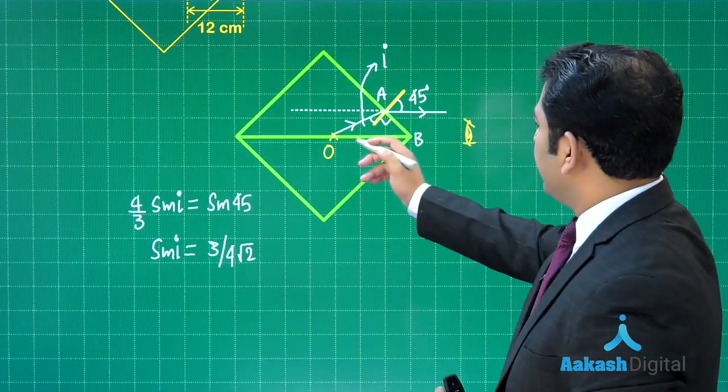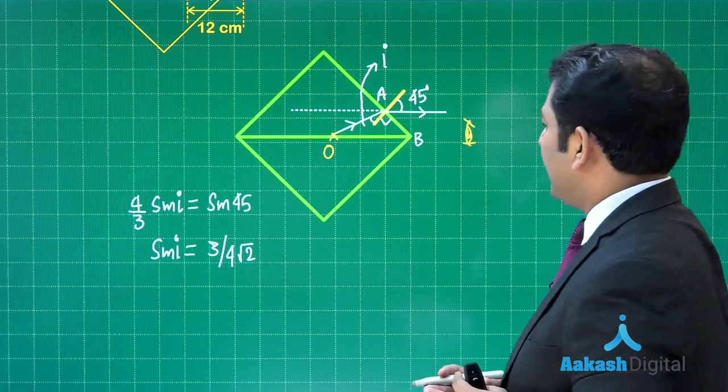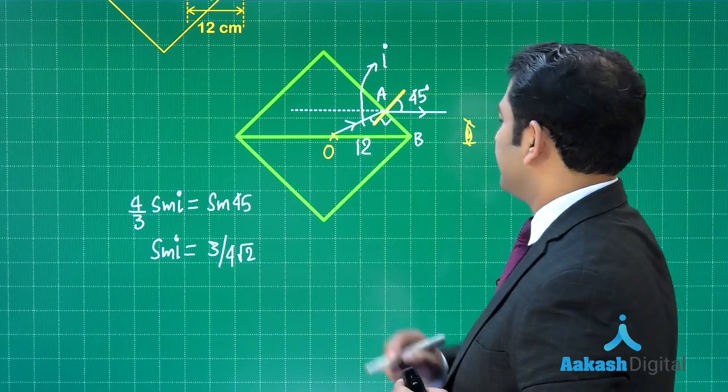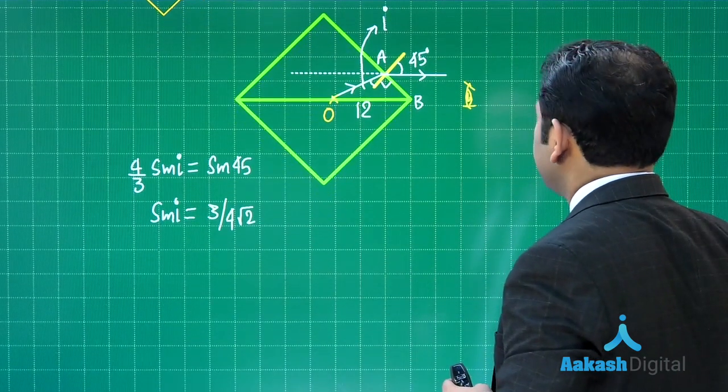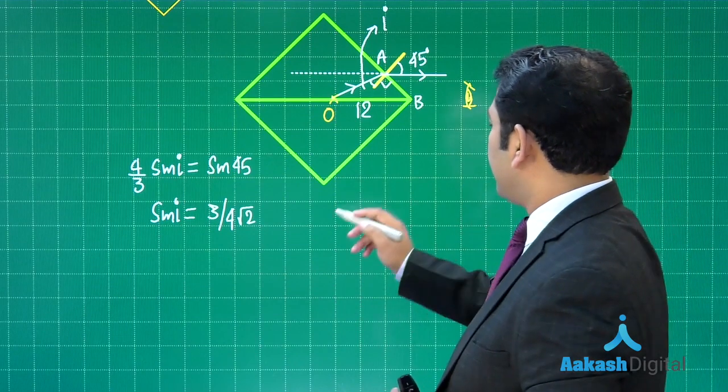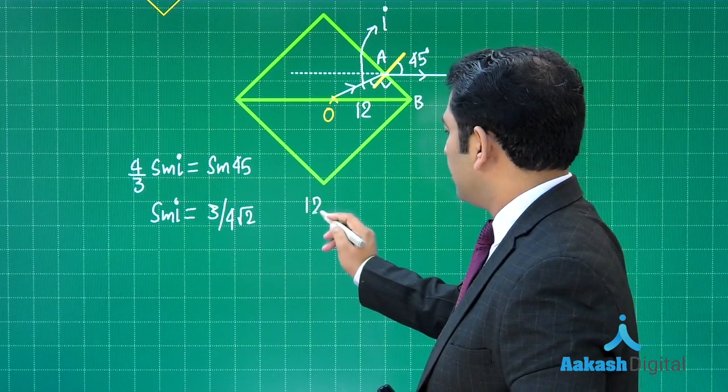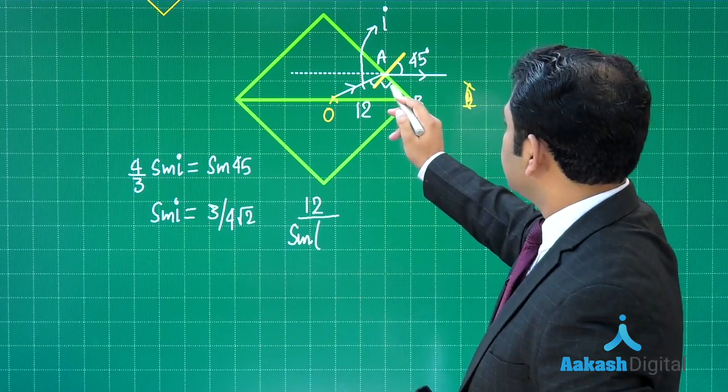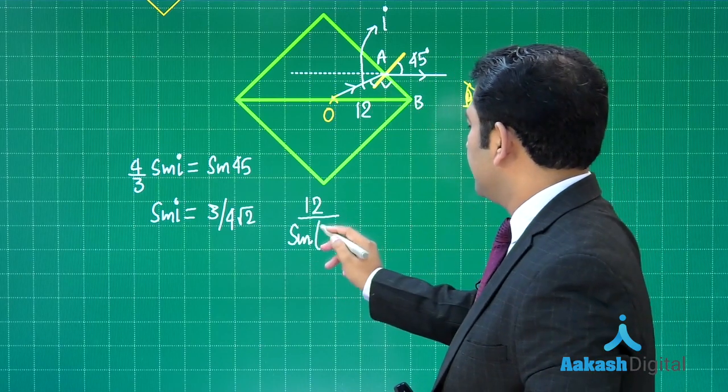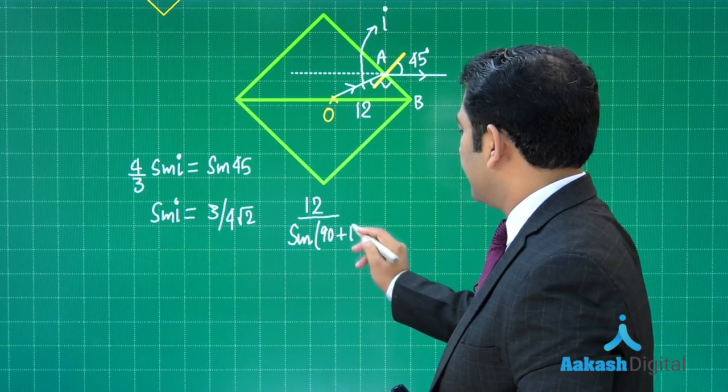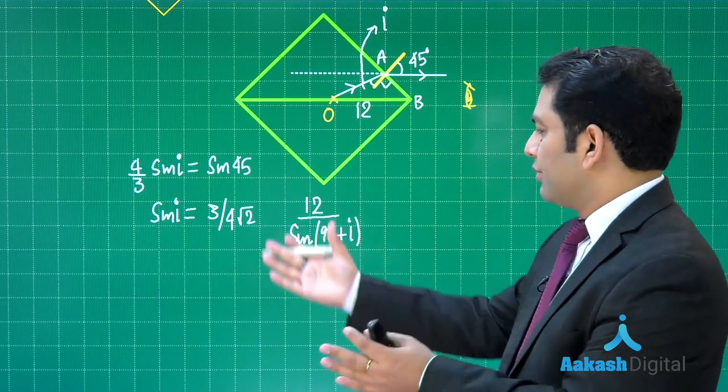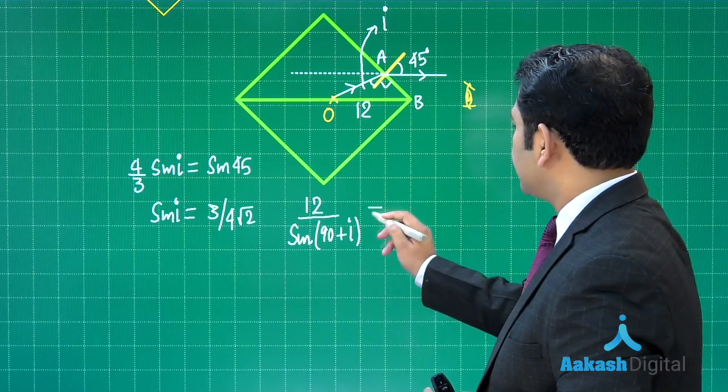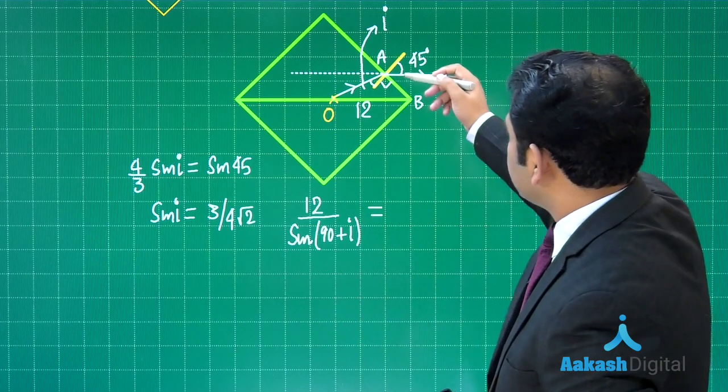In triangle OAB, this distance is 12 centimeters. I get an opportunity to apply the sine law: 12 divided by sin(90 + i) equals AB divided by sin of this angle.